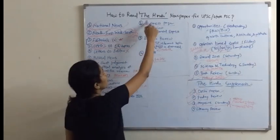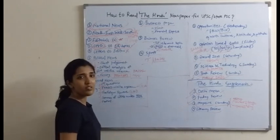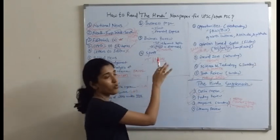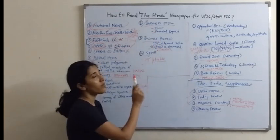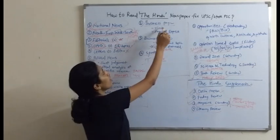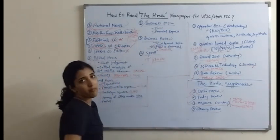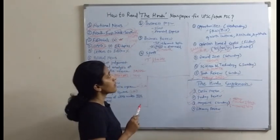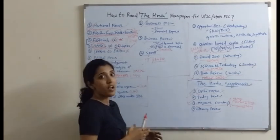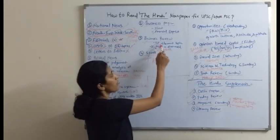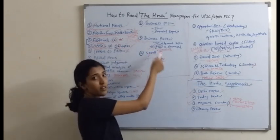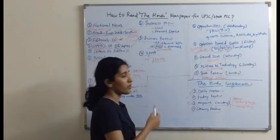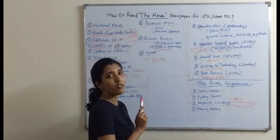The next one is the business page. The business page coverage in the Hindu is average, so you just need to have a glance at whatever news is there. If somebody wants thorough coverage of business news, they can go for other newspapers like Mint or Financial Express, as the Hindu only dedicates one page to business news. Next is the business review, which is just next to the business page. Here, financial policies are sometimes analyzed in great detail, and it is very good for Mains Paper 3. Again, you have to see which topics relate to your syllabus — Paper 3 or any related topic. For reading the Hindu, you have to be thorough with your syllabus as well.